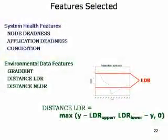The system health features defining the network health space — node deadness, application deadness, and congestion — were taken directly from Sympathy. The environmental data features are gradient, distance from the linear detection range, and distance from the nonlinear detection range, as already described.